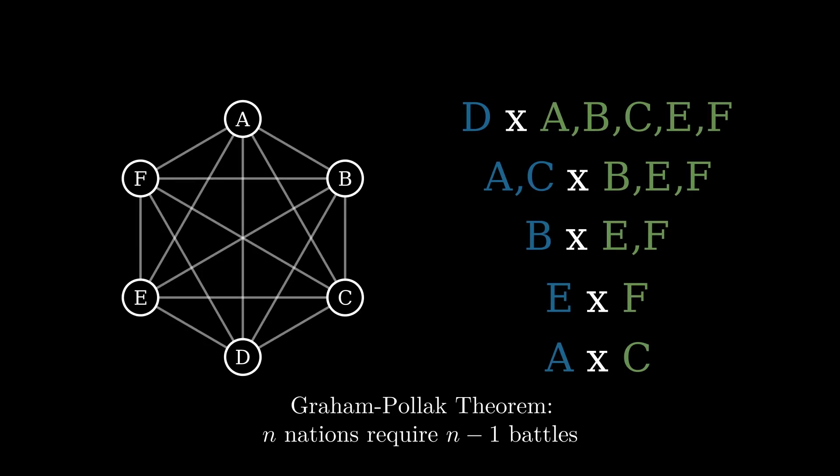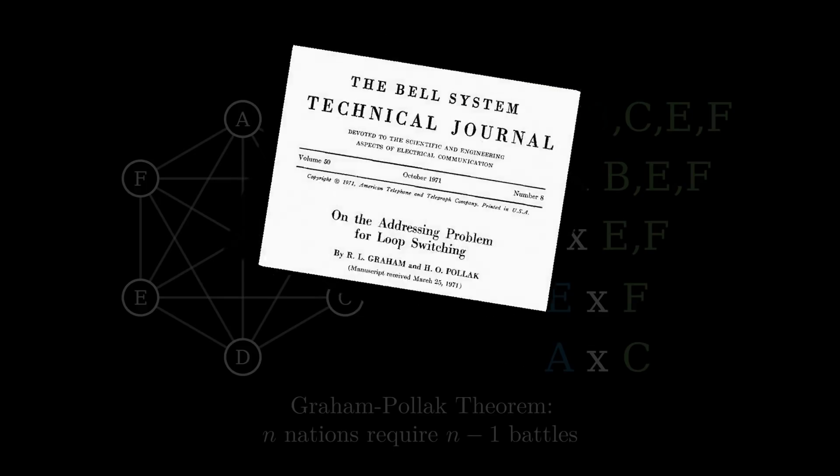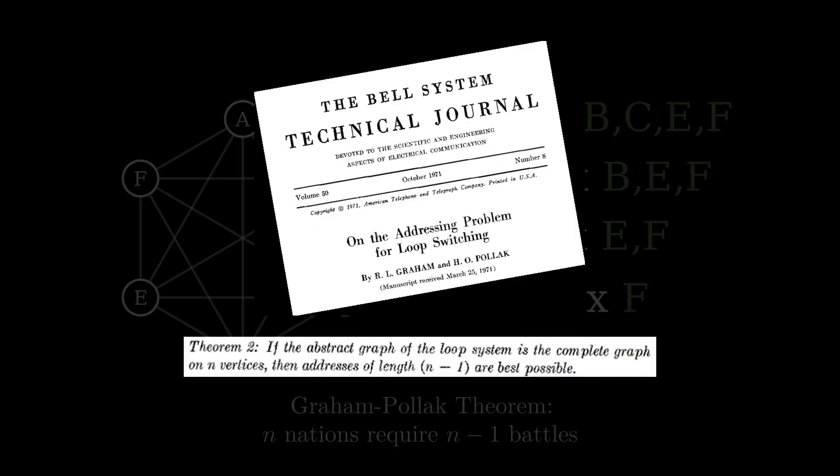Of course Graham and Pollack weren't trying to analyze the battle counts of war-thirsty nations. They were actually trying to analyze how to create a communications network in which a message can easily figure out how it should traverse the network to reach its target machine. They also wanted to make the address of each machine as short as possible, and in theorem 2 of their paper, they proved that in a certain case, the addresses need to have length N minus 1. It turns out that this statement is equivalent to our statement about needing N minus 1 battles. We won't see the connection between the two here because that kind of network isn't relevant nowadays, and more importantly, because the theorem finds applications in other mathematical questions, so it is worth studying it on its own.